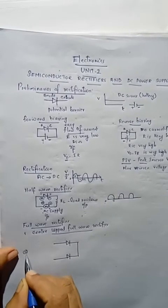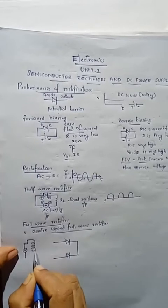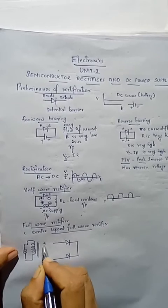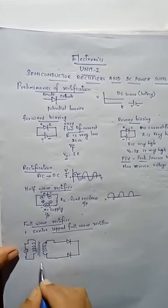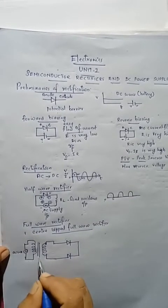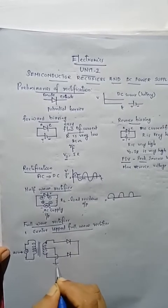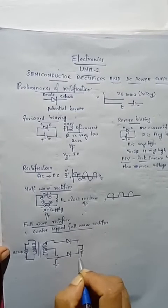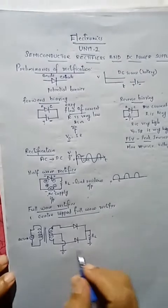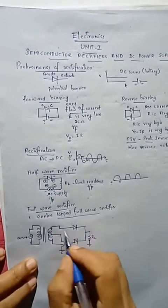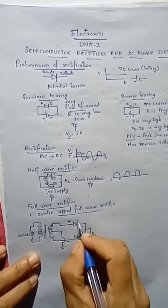We need an AC supply, which is given to the primary of a transformer. The secondary of the transformer has a center tap, which is grounded. From the two ends of the secondary and the center tap, we connect the two diodes, and the load resistance RL is connected from the common point of the diodes to the center tap ground.